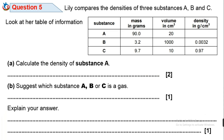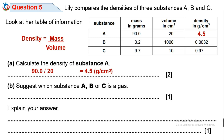Question 5. Lily compares the densities of three substances A, B, and C using a table of information. 5A: Calculate the density of substance A. Density is calculated as mass divided by volume. Substance A has a mass of 90 grams and a volume of 20 cm cubed. Dividing 90 by 20 gives 4.5 grams per cm cubed.